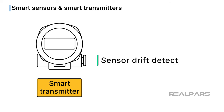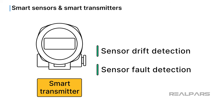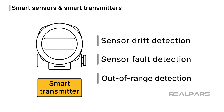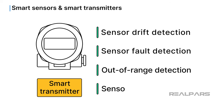Sensor drift detection looks for a gradual change in the sensor output that deviates from the expected behavior over time, thus predicting when calibration or maintenance is required. Sensor fault detection recognizes faults such as sensor damage, open circuits, or short circuits in the sensor circuit. Out-of-range detection monitors if the sensor reading falls outside predetermined ranges. Sensor health detection helps to predict sensor degradation by tracking the overall health of the sensor by analyzing various parameters.